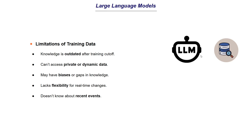Depending on the data it was trained on, the model can have biases in its responses, mainly because of gaps in its knowledge. The model doesn't have a way to validate whether its response is factually correct, so there's no built-in fact-checking system. It also lacks flexibility for real-time changes — for example, if a new version of the pandas library is released, the model doesn't know about it. It doesn't know about recent events because of the training cutoff date.